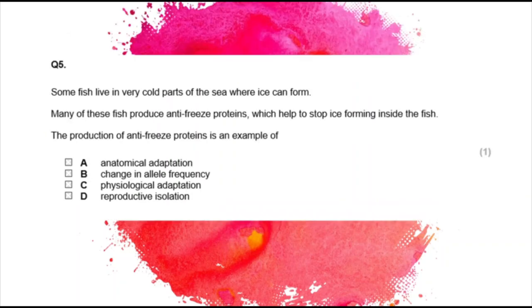Some fish live in very cold parts of the sea where ice can form. Many of these fish produce antifreeze proteins which help stop ice from forming inside the fish. The production of antifreeze proteins is an example of physiological adaptation.